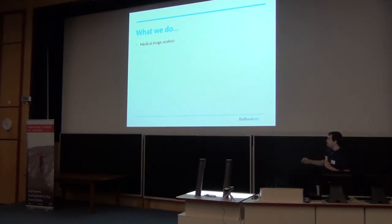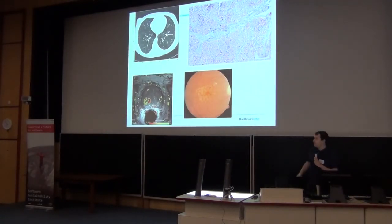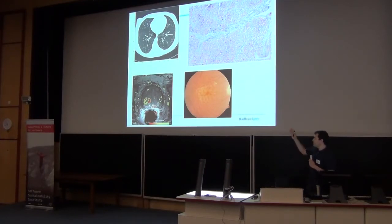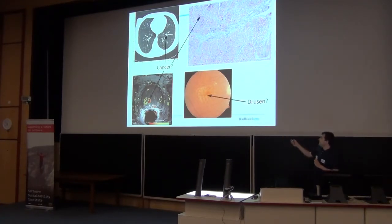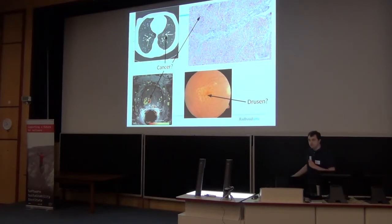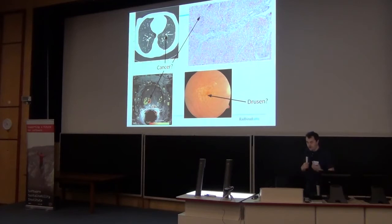So what does this actually mean? Well, we analyze images like these. Top right, for example, is a pathology image. Top left is a lung CT image. The question asked in our department is: are there any interesting pathologies in these images? For example, cancer — this is very popular. Also, lesions in retinal images — also very common.